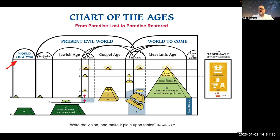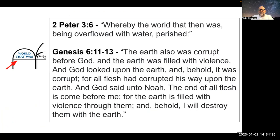In the plan of God, we would like to first begin with the world that was. This is an age that began with the creation of Adam and ends in the destruction of that world in the flood. The scriptures that we like to use for this age, we find in 2 Peter 3, verse 6, where the apostle Peter says, 'whereby the world that then was being overflowed with water perished.'